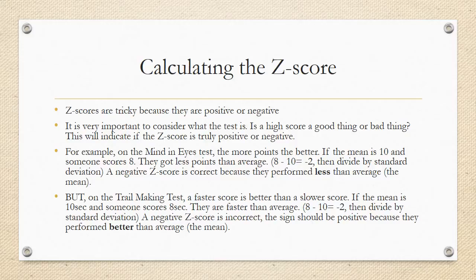Sounds easy enough, right? But they can be tricky because z-scores can be positive or negative. It's very important to consider what the test is. Is a high score a good thing or a bad thing? This will indicate if the z-score is truly positive or negative. Let's take an example. On the mind and the eyes test, the more points the better. If the mean is 10 and someone scores an 8, they've got less points than average. So let's do the math. 8 minus 10 equals negative 2, and then you would divide by the standard deviation. In this case, a negative z-score is correct because they performed less than average, which is the mean.